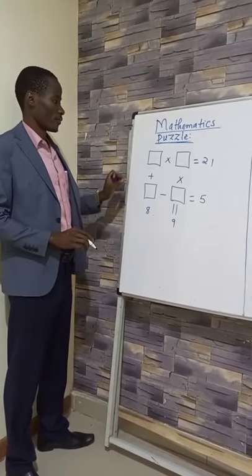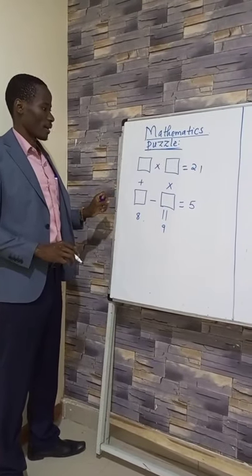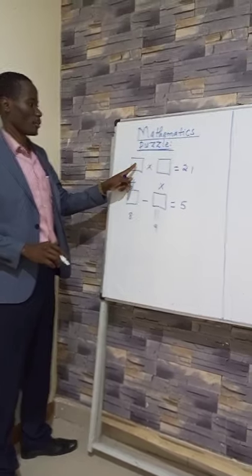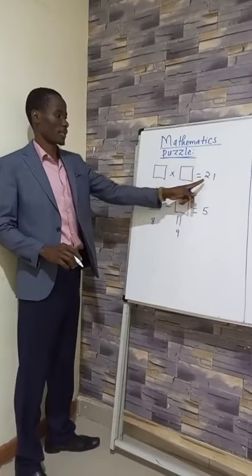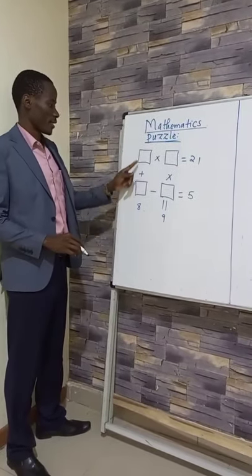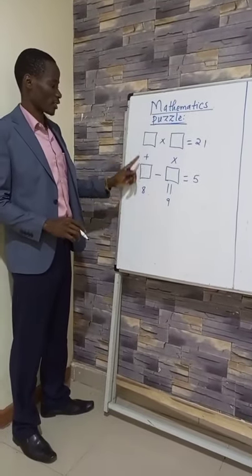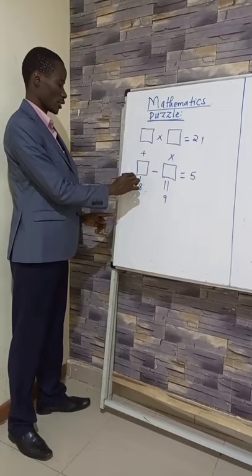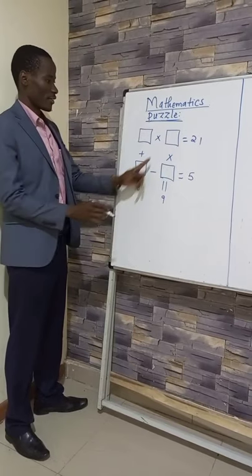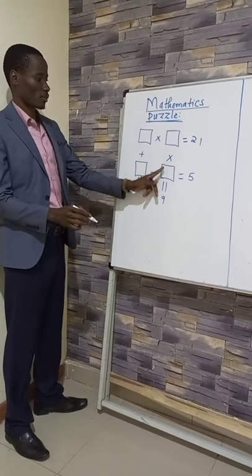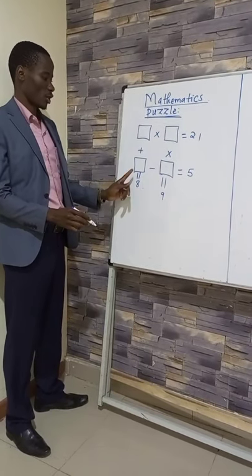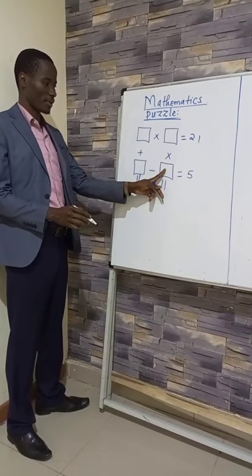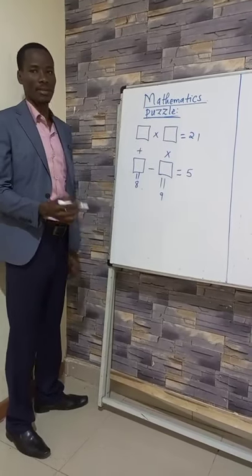We want to solve the puzzle above. We want to find the value here. When we multiply with the value here, we get 21. The value in this box plus the value here is equal to 8. The value in this box multiplied by the value here, we get 9. While the value in this box takes away the value here, we get 5.